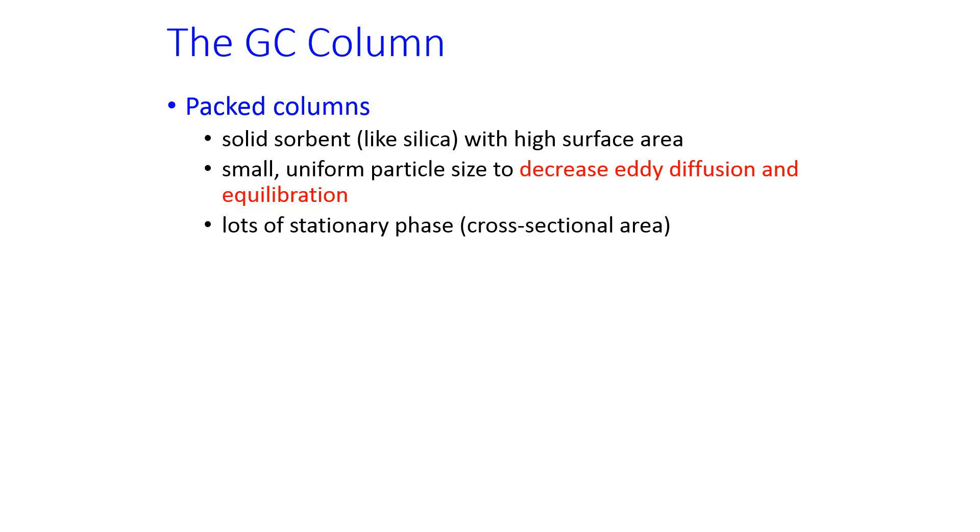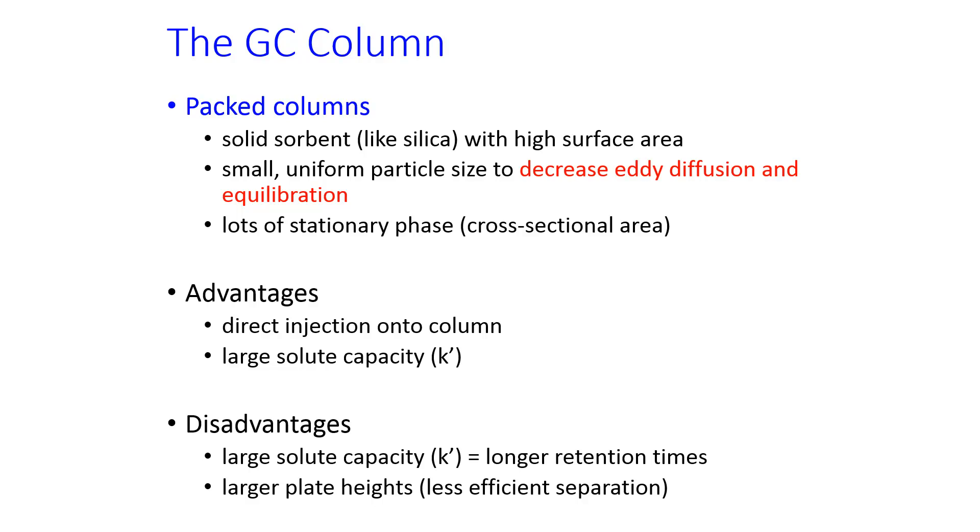These silica particles should be small and uniform to decrease processes that we'll talk about later that can lead to band broadening. The advantages of this is that you can inject directly onto a packed column, and they have a large solute capacity, so they're difficult to overload. A disadvantage is that this large solute capacity comes along with a longer retention time, and they also have less efficient separation.